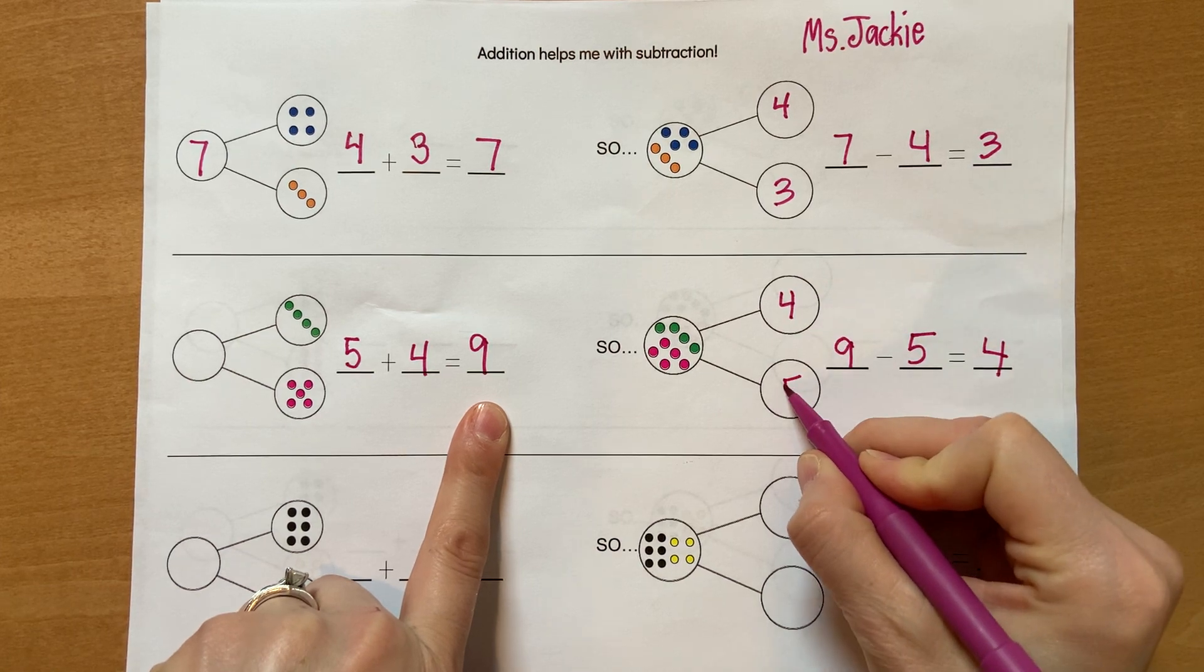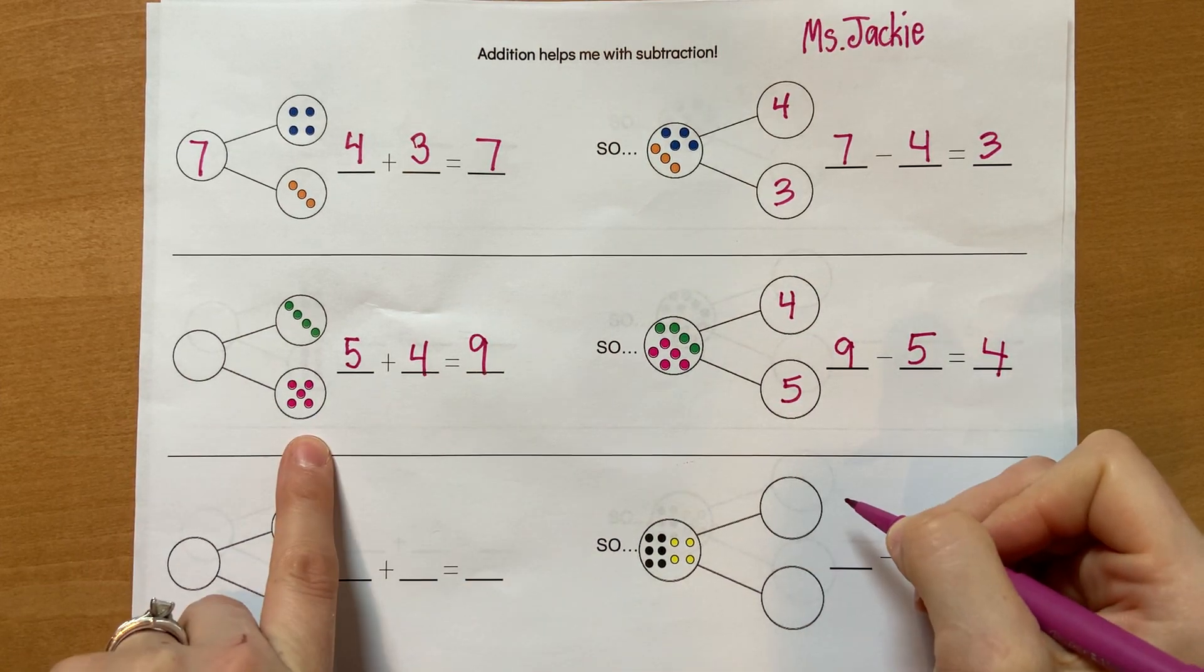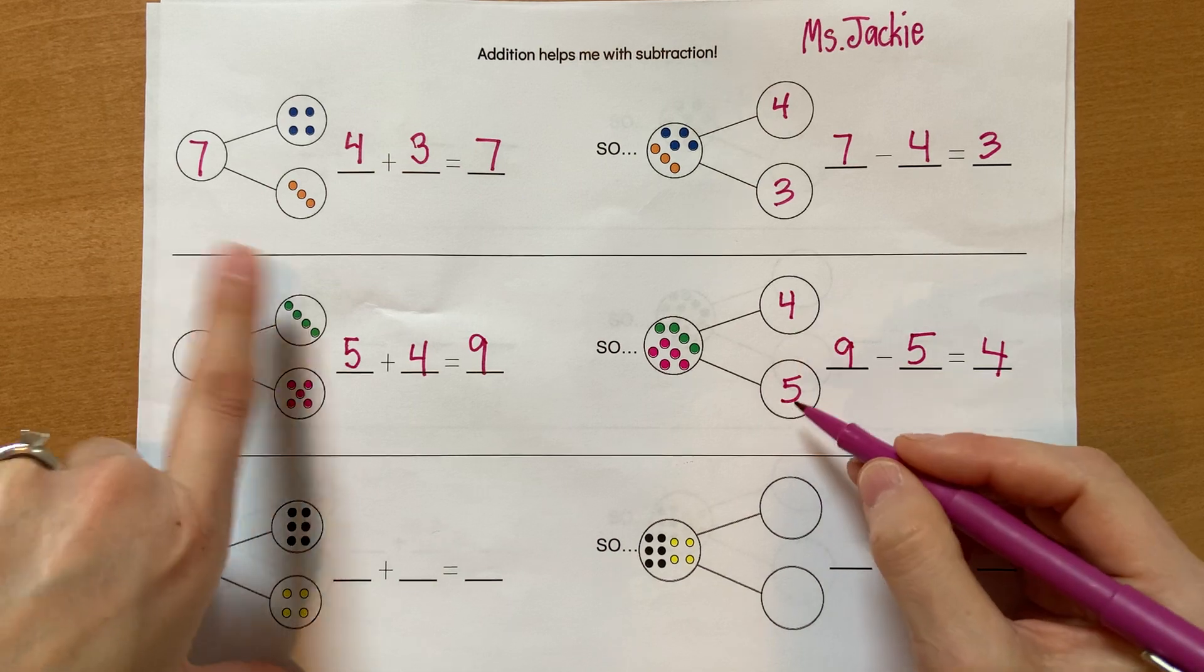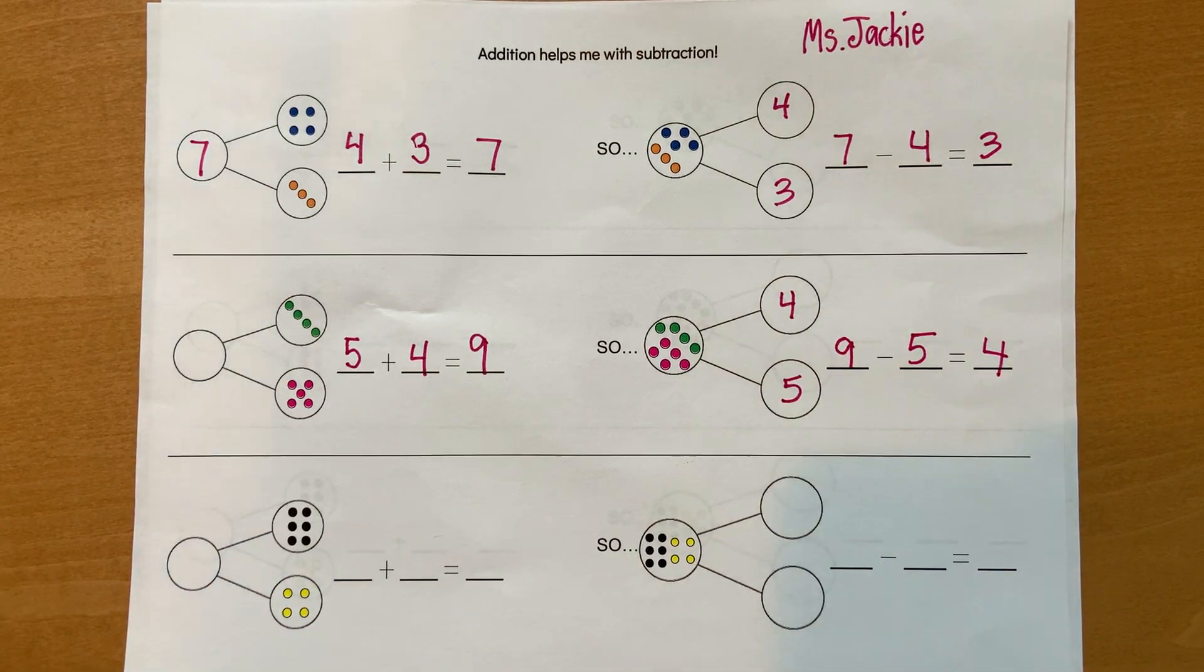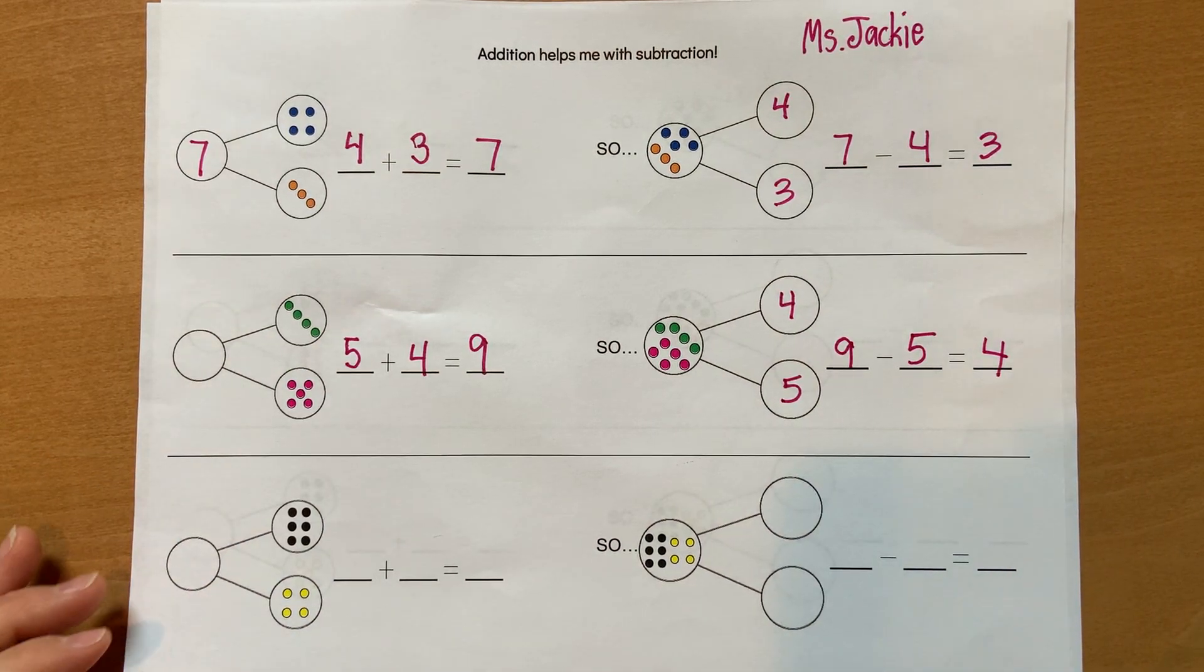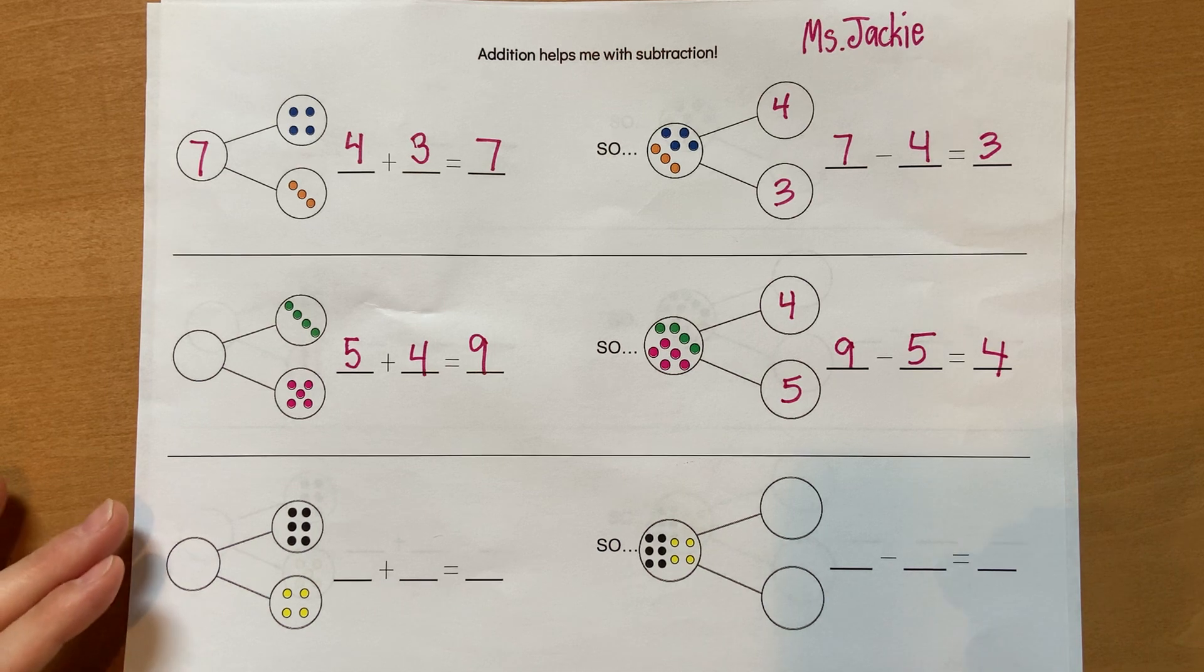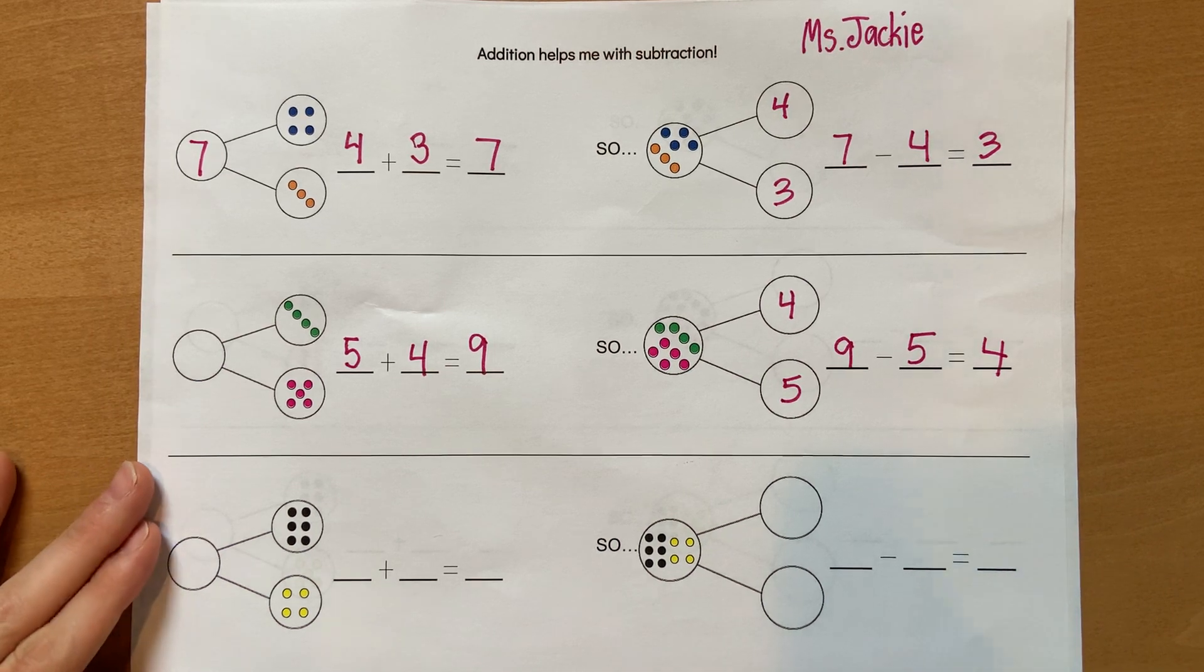So we have four and five, just like over here. We have four and five make nine, and four and five make nine. The number bond stays the same. It's whether you're taking away or putting together. Addition helps me with subtraction. Let's do the next one.